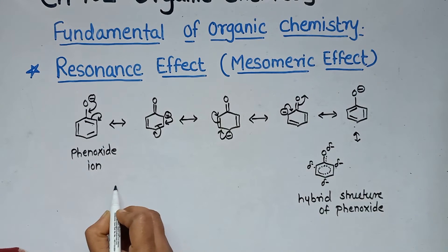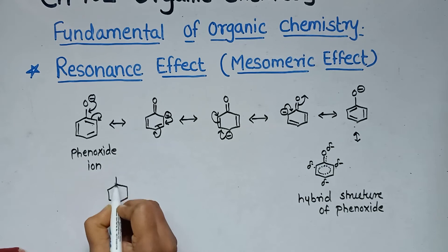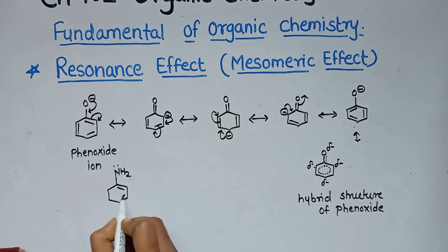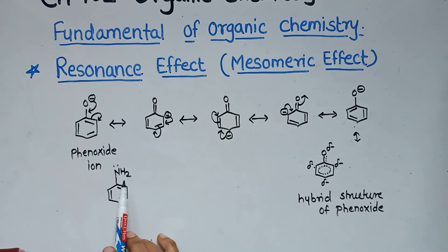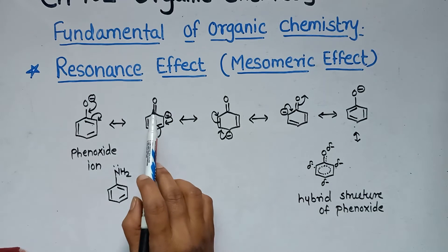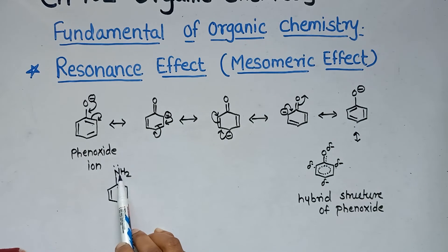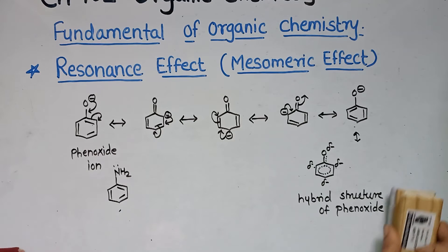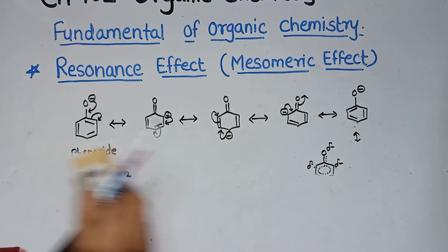Similarly, the resonating structures of aniline can be written — you should write these in your notebook. The process is the same; only replace the oxygen with NH₂. The phenoxide ion is an example of the +R effect.